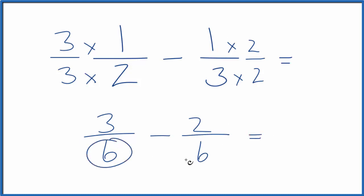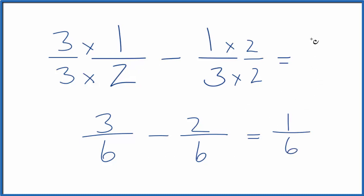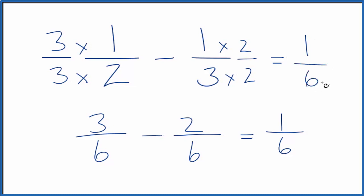We have the same denominator, so I can just subtract three minus two. That gives me one. I bring the six across. One half minus one third gives us one sixth. This is Dr. B looking at the difference between one half and one third. Thanks for watching.